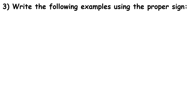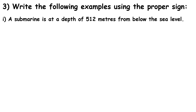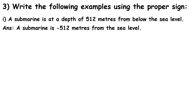Let us now move to the third sum of this problem set: write the following examples using the proper sign. The first question — a submarine is at a depth of 512 meters below sea level. Since the word 'below' is used, the number gets a minus sign: minus 512 meters from sea level.